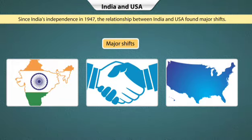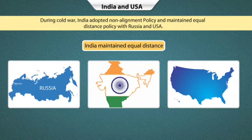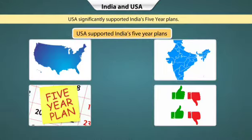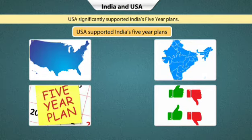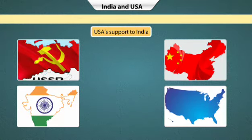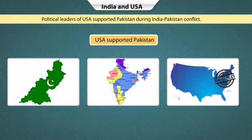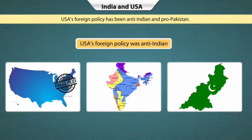Since India's independence in 1947, the relationship between India and USA has found major shifts. During the Cold War, when the world had become bipolar, India adopted a non-alignment policy and maintained equal distance with Russia and USA. USA significantly supported India's five-year plans to boost the economy. USA supported India during the Indo-China War in 1965, but in later years, political leaders of USA supported Pakistan during India-Pakistan conflicts. Most of the time, USA's foreign policy has been anti-Indian and pro-Pakistan.